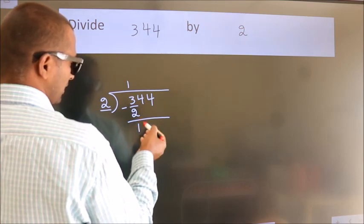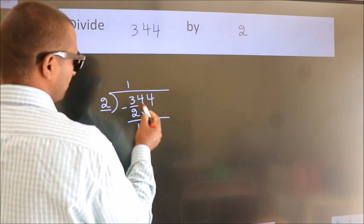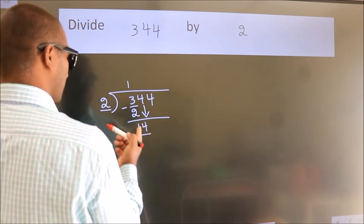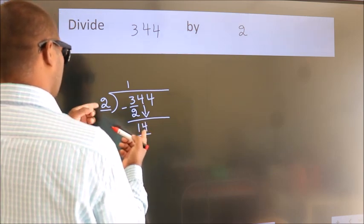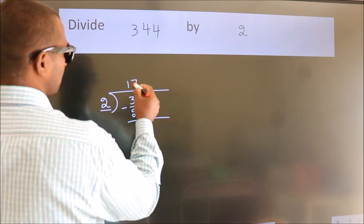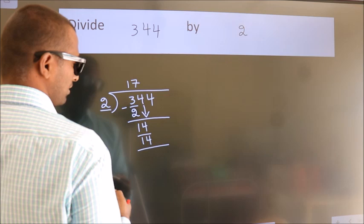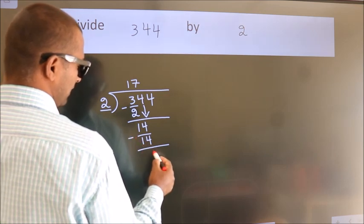After this, bring down the beside number. So 4 down. So 14. When do we get 14? In 2 table. 2 7s, 14. Now we subtract. We get 0.